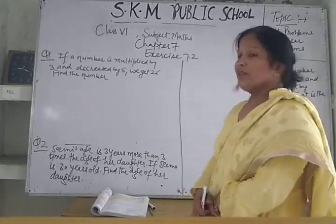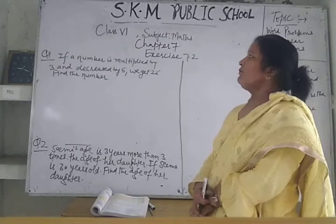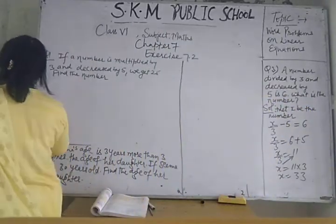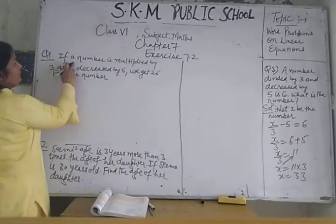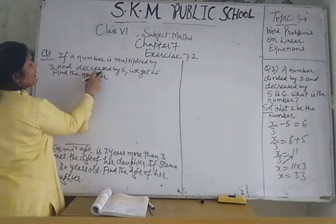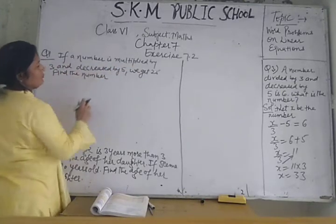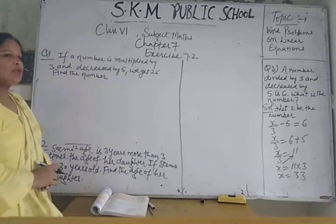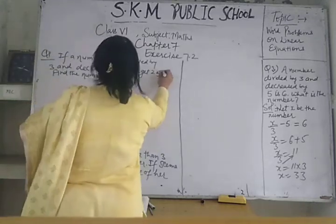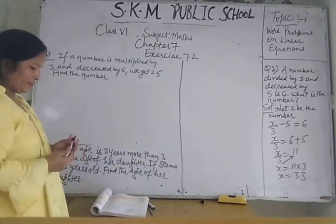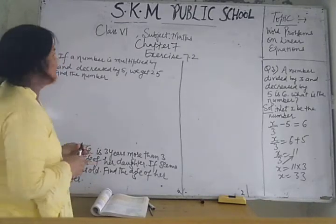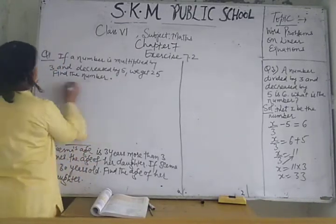Let's take the first question: if a number is multiplied by 3 and decreased by 5, we get 25. Find the number. We don't know the number, so let that number be x.